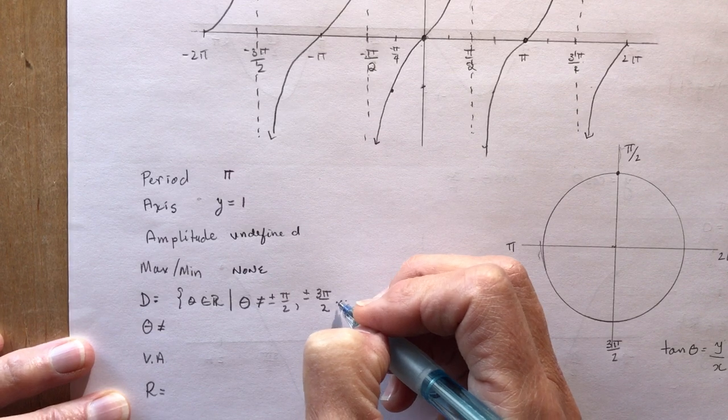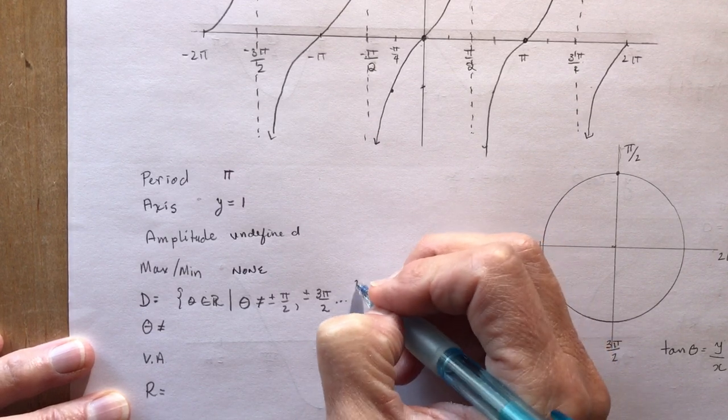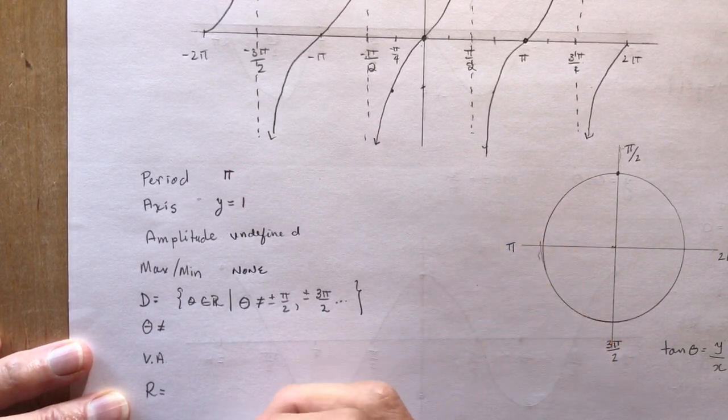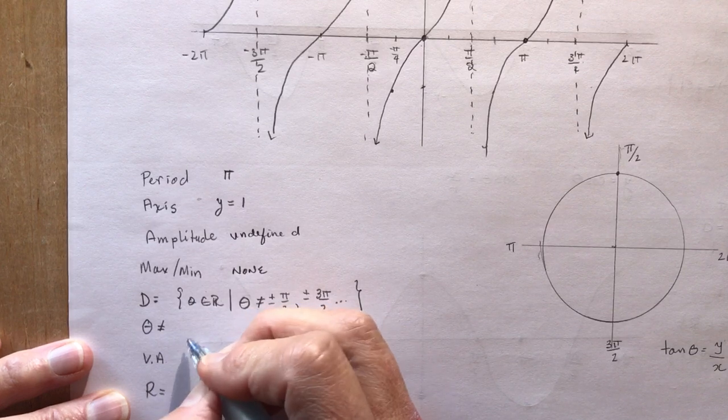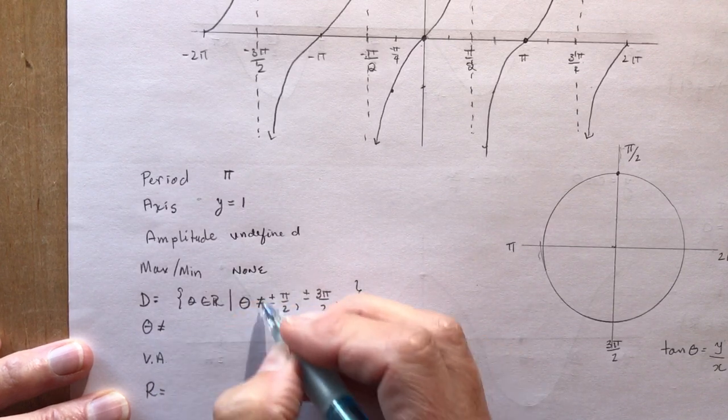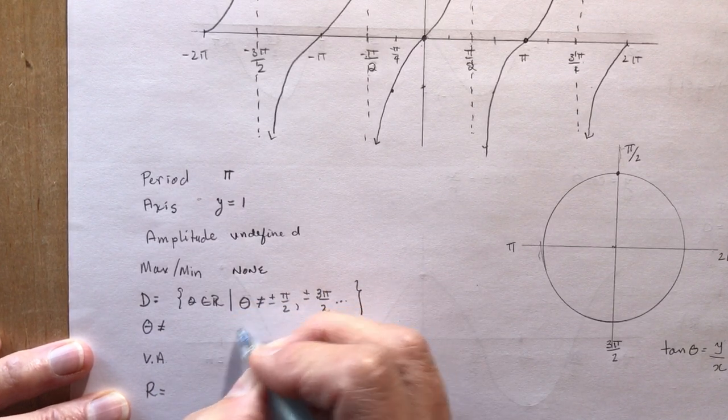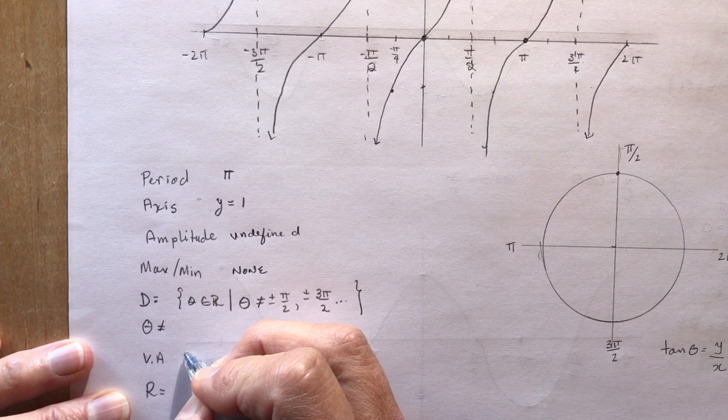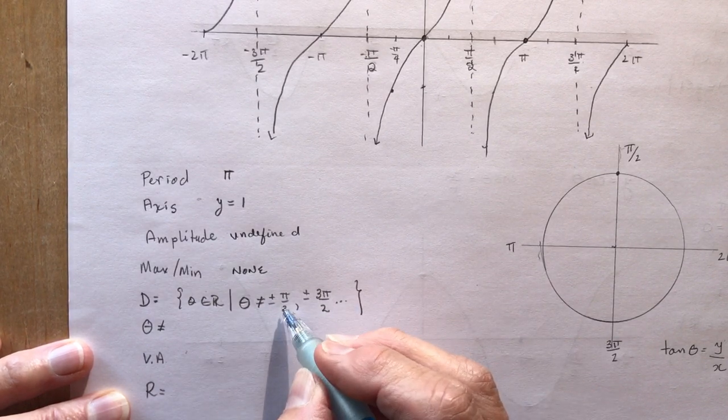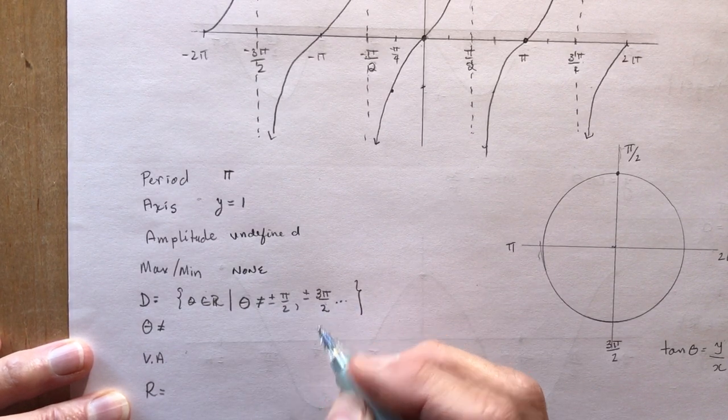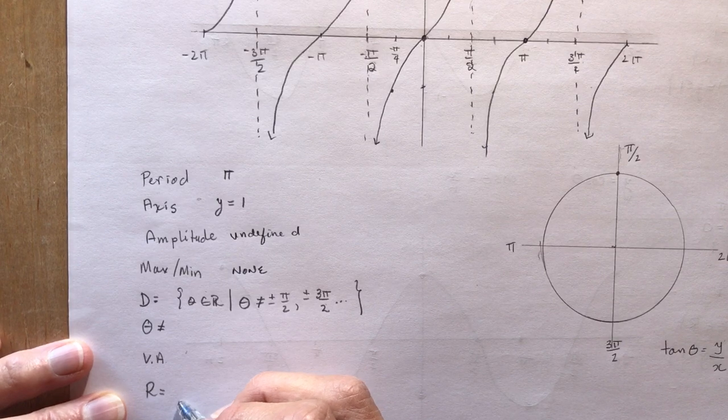So you could go 3 pi over 2, 5 pi over 2, so on, et cetera. So theta is not equal to, these are the vertical asymptotes. I've kind of covered that here. So these are the vertical asymptotes are just pi over 2, 3 pi over 2, okay? And the range,